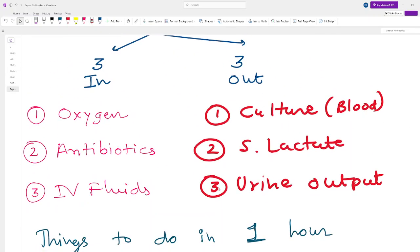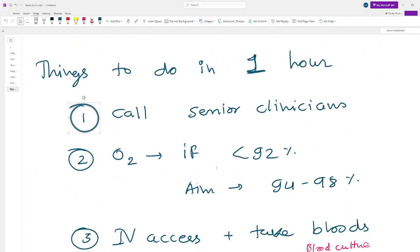What is Sepsis 6? These six things: oxygen, antibiotics, IV fluids, three out: culture, lactate, urine output. And these are the things you need to do in the first hour of identifying sepsis. Thank you very much.